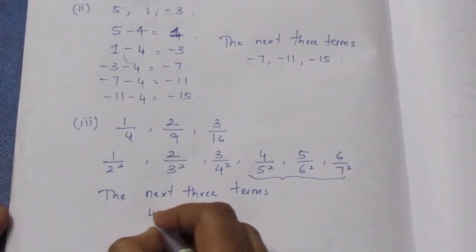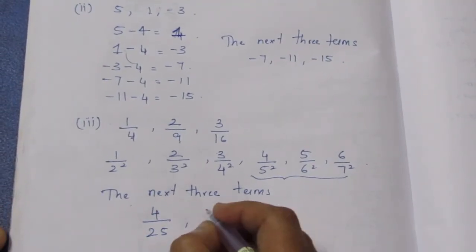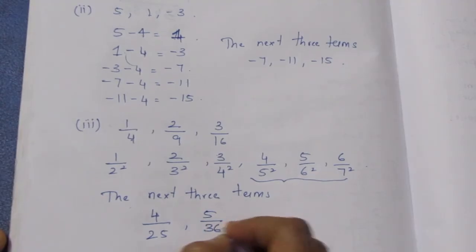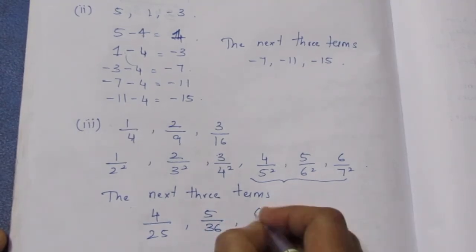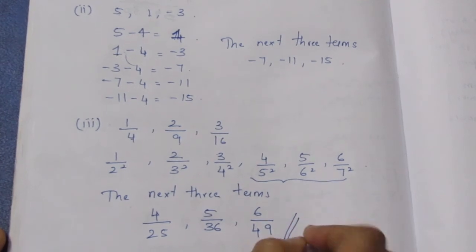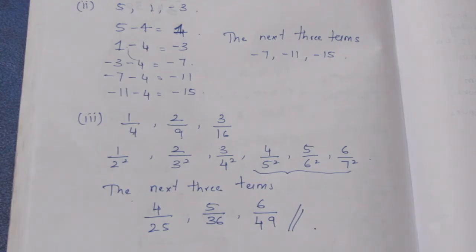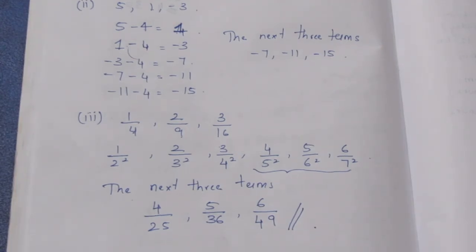The next terms follow the pattern: numerator increases by 1, denominator is the next perfect square. So the next 3 terms are 4/25, 5/36, and 6/49, where 25, 36, 49 are 5 squared, 6 squared, and 7 squared respectively.